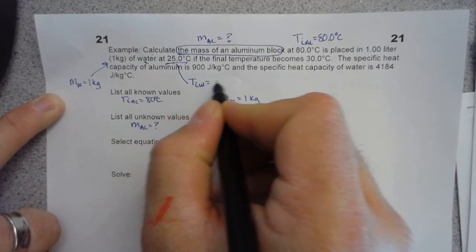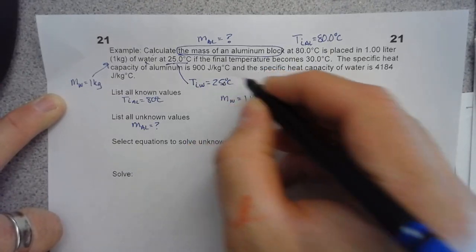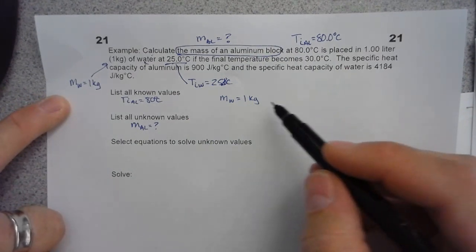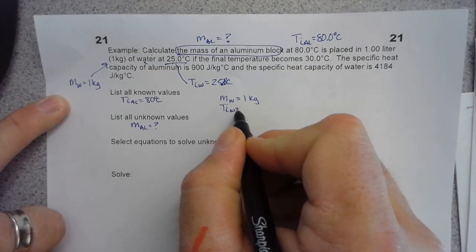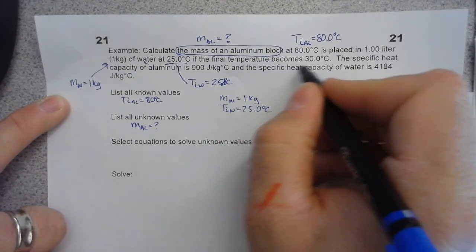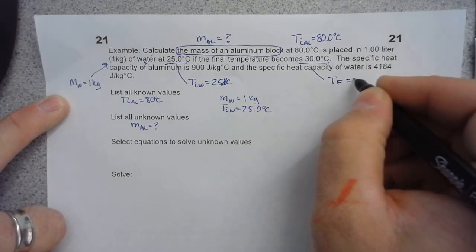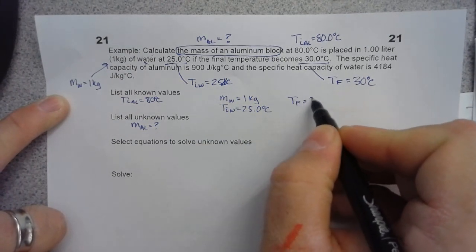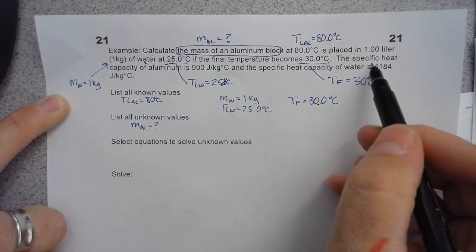The water is at 25 degrees Celsius, so the temperature initial of water is 25.0°C — that's a known value. If the final temperature becomes 30 degrees Celsius, then temperature final is 30.0°C — also a known value.